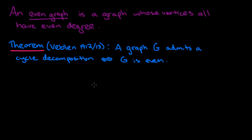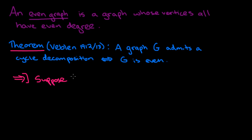The first part of the proof is fairly straightforward. If we've been watching the videos on Euler tours, we'll see a lot of similarities in the first direction. What we're going to do is start off by assuming that there is a cycle decomposition of G.